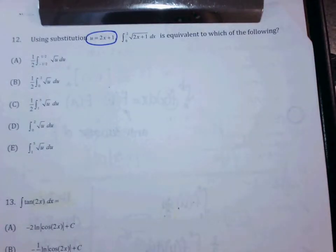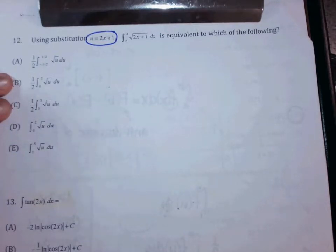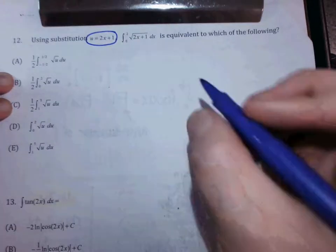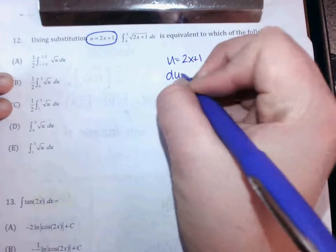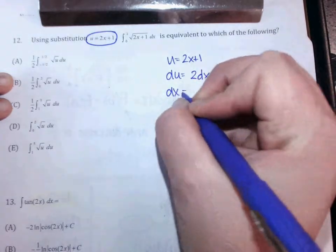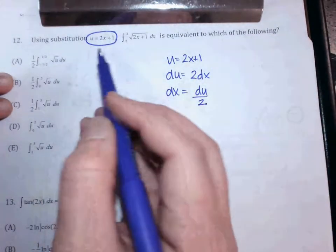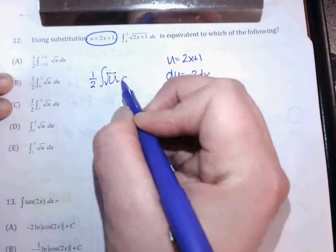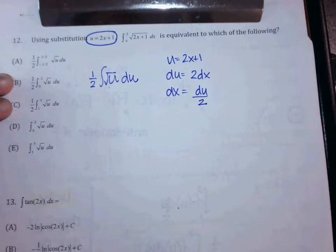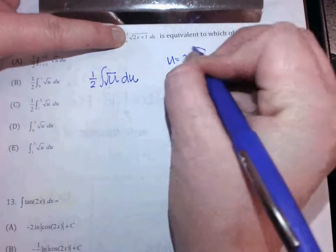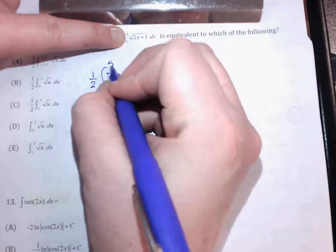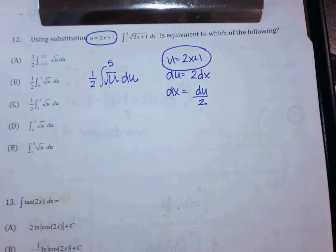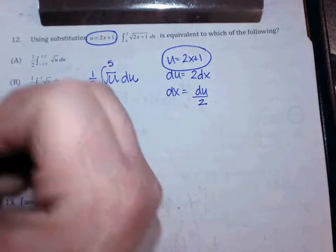Which one are y'all picking? I see lots of C's and lots of B's. What's the difference? The endpoints. Do you have to switch them or not? Yes. If you're going to leave it in terms of U, you can't use the original endpoints. Your U was 2X plus 1. DU is 2DX, which means DX is DU over 2. Most of y'all got the one half on the outside — U square rooted DU. But you have to change your endpoints. If it used to be 2, now it's 2 times 2 plus 1 equals 5. If it used to be 0, it's 0 plus 1 equals 1. So the answer is C.